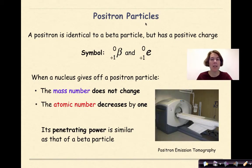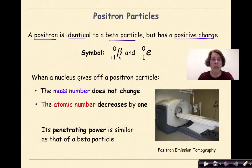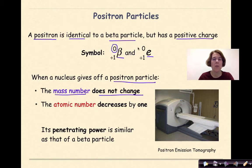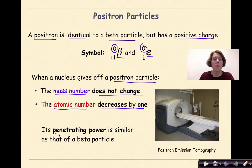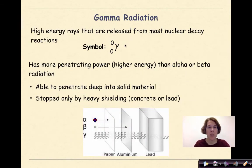A positron is identical to a beta particle but has an overall positive charge. Just like a beta particle, it is represented with a beta symbol or an E. When a nucleus gives off a positron particle, the mass number does not change, but the atomic number decreases by one. The penetrating power for a positron particle is very similar to that of a beta particle.